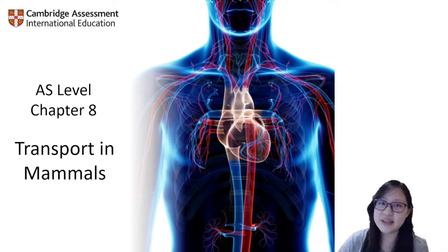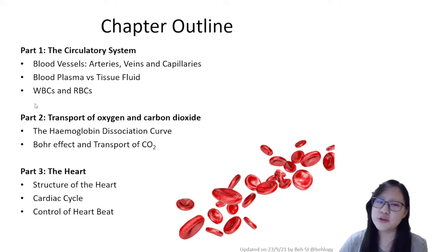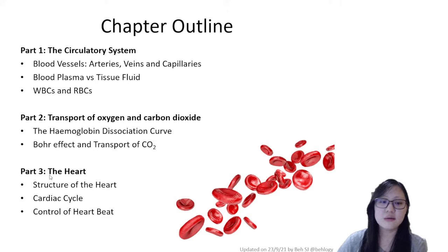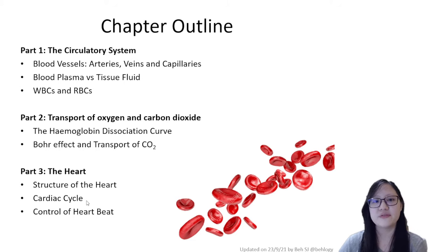Hello everyone and welcome to chapter 8 — transport in mammals. In this chapter there are three main parts: number one is the circulatory system, which includes the vessels, fluids, and cells; part two is about transport of oxygen and carbon dioxide; and part three is the heart. It's quite a big chapter, but let's start one step at a time.